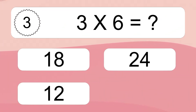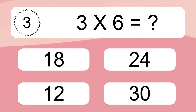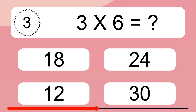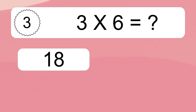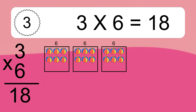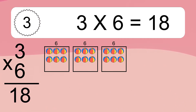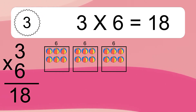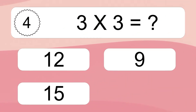3 times 6 equals what? 3 times 6 equals 18. We have 3 boxes, and each box has 6 colorful balls inside. If you count all the balls in all the boxes together, you will have 3 times 6 balls. This equals 18 balls.